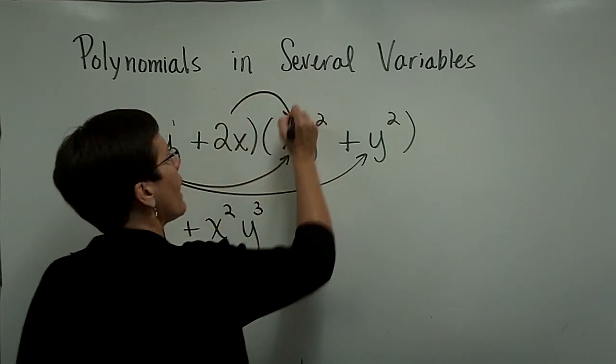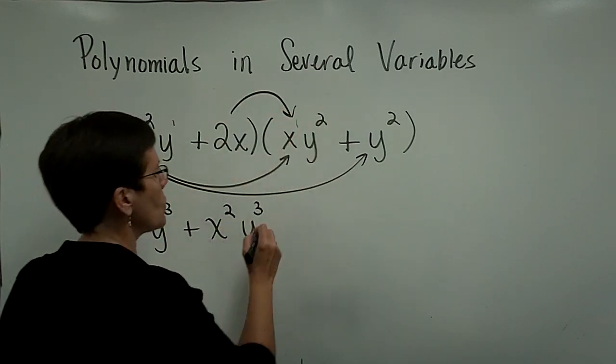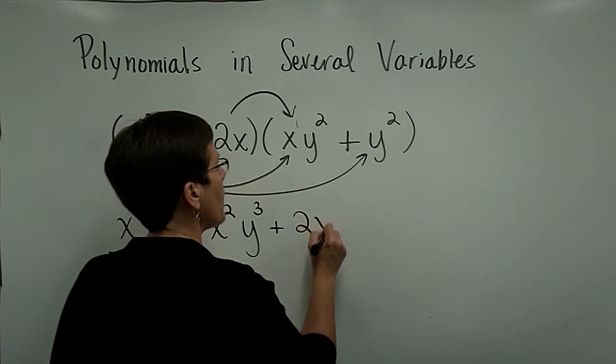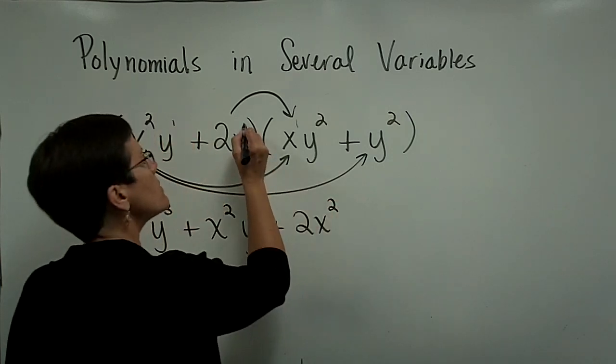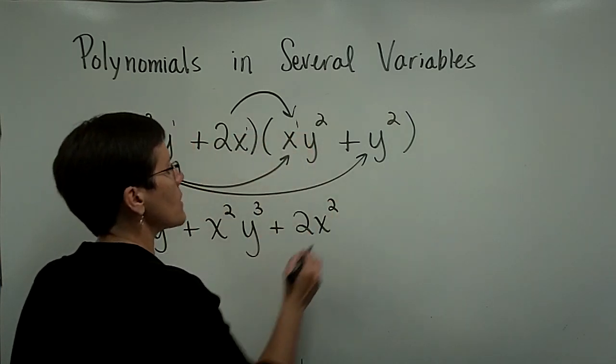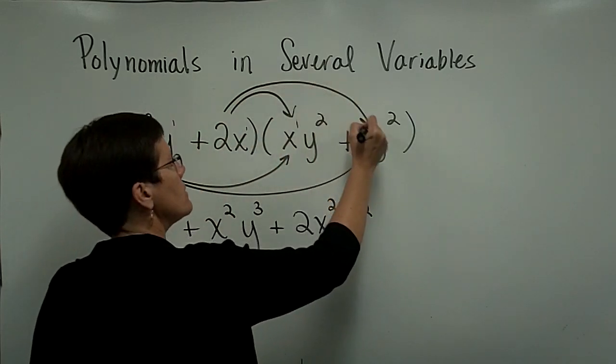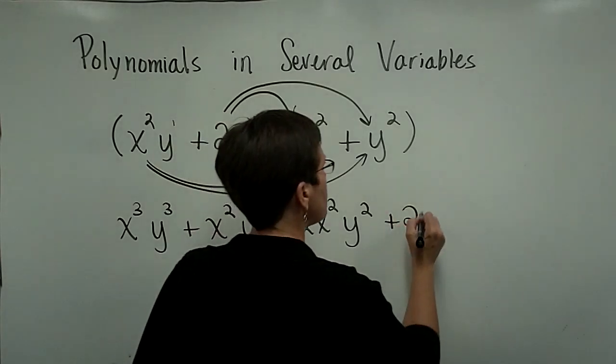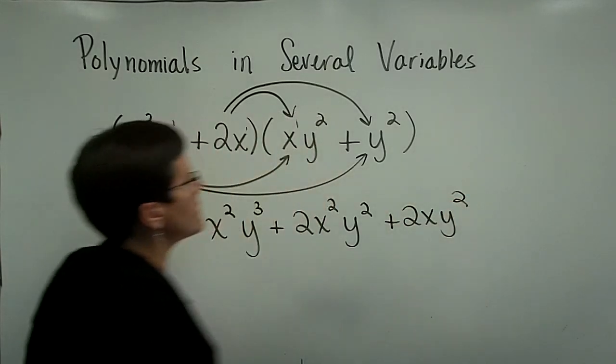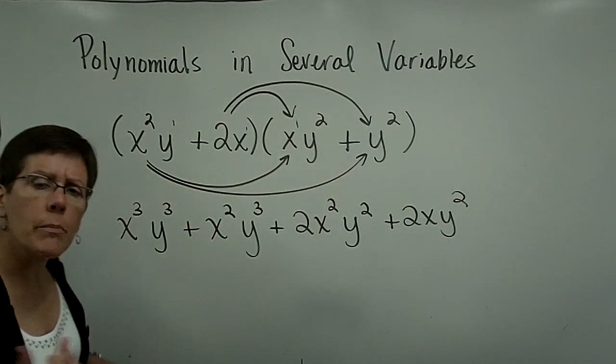Next, I'll take 2x times xy². That'll give me 2x² here, because this x¹ times x¹ is x². y² is brought along. 2x times y² is the last term.